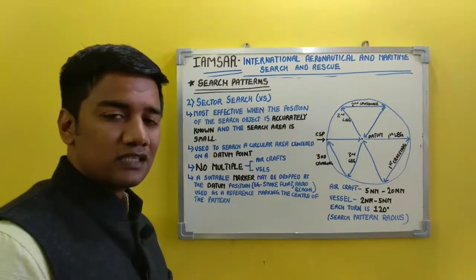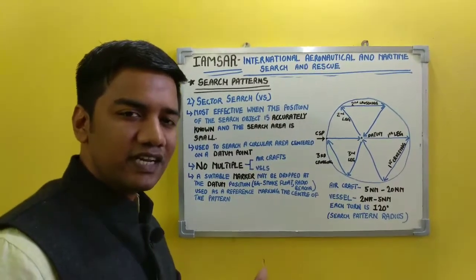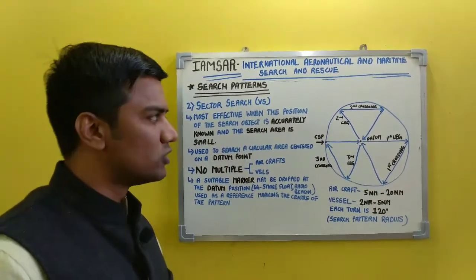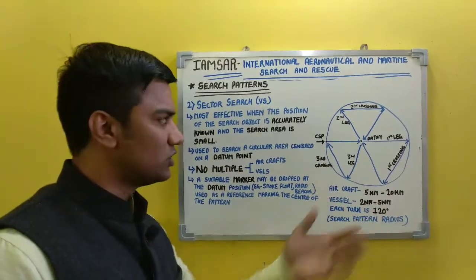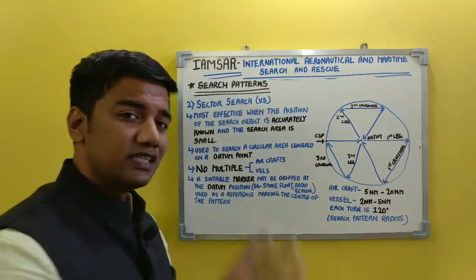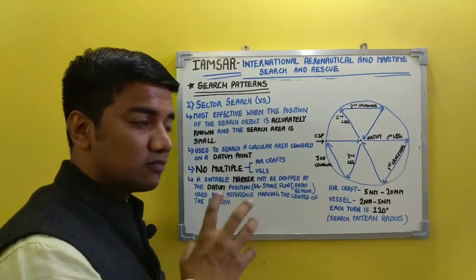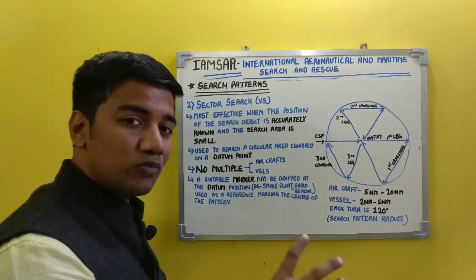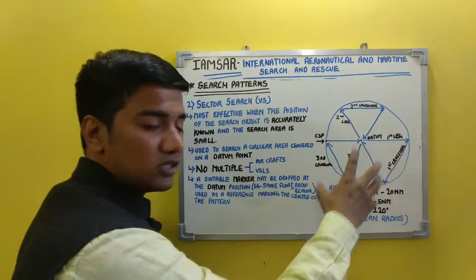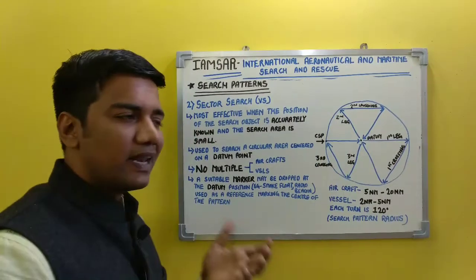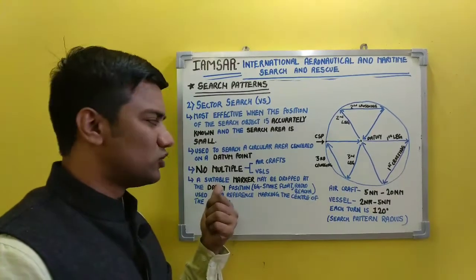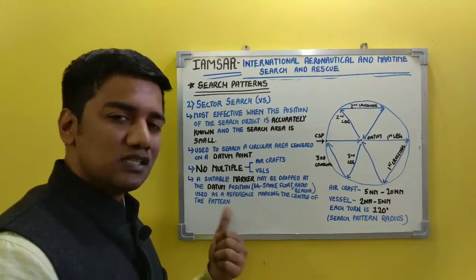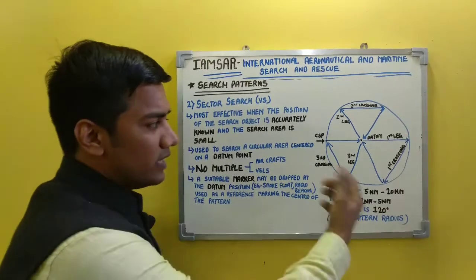Moving on to our next search pattern, which is sector search. Sector search is indicated with the code VS, where V indicates sector search and S indicates single unit to be used. This pattern is most effective when the position of the search object is accurately known and a very small area is to be searched. As the area is small, multiple units — no multiple aircraft or vessels — are recommended. A single unit search is sufficient and recommendable.